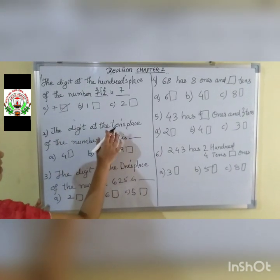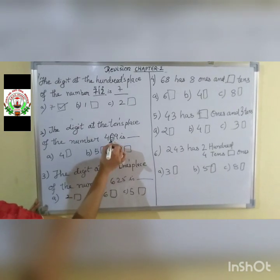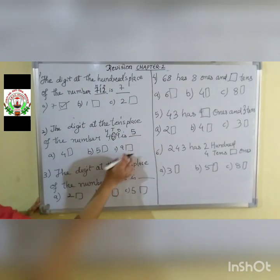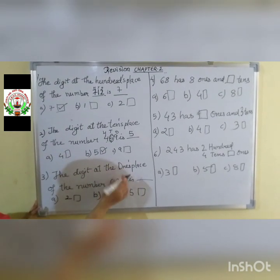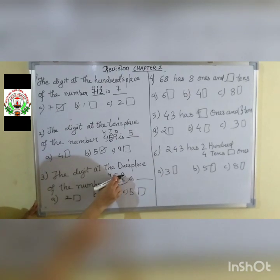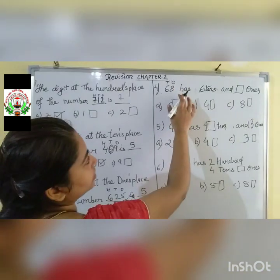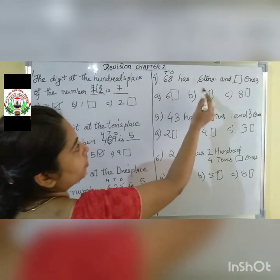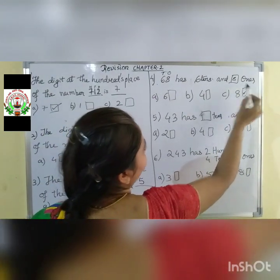The digit at the 10s place of the number 459 — 9 is in the 1s place, 5 is in the 10s place, 4 is in the 100s place. Our number under the 10s place is 5 — tick mark option B. The digit at the 1s place of the number 625 — 5 is in the 1s place. So the answer is 5, option C. For 618: 8 is in the 1s place and 6 is in the 10s place — the 10s digit is 6, so tick mark 6.